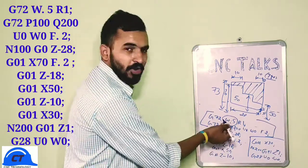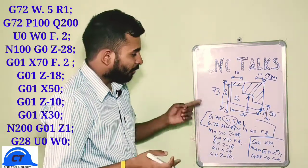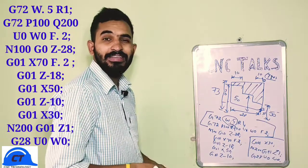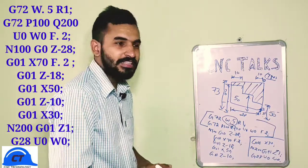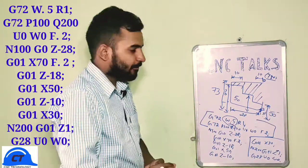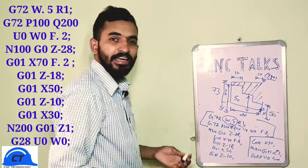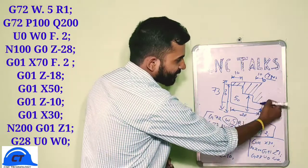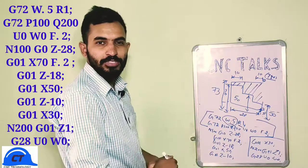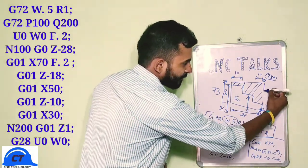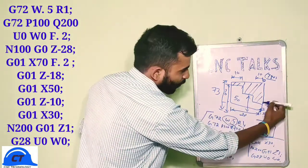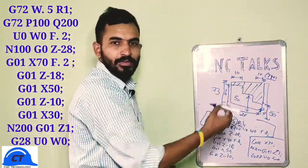W.5 defines the depth of cut of 0.5mm along the X axis — meaning during each cut, our tool will remove 0.5mm of material. R defines the retraction amount, which means after each cut our tool will lift up 1mm and jump back to its main position. So if our tool is cutting in this way, after finishing one cycle it will lift up 1mm and return back to its position for another cycle.